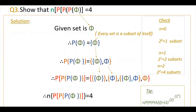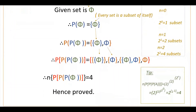Show that n(P(P(P(∅)))) = 4. There are three power sets here. The given set is the empty set. P(∅) = {∅}. Then P(P(∅)) = {∅, {∅}}, which has two elements. Then P(P(P(∅))) has four elements since 2^2 = 4. You can verify using the tip: there are three P's, so compute 2^(2^(2^0)) = 2^(2^1) = 2^2 = 4. Hence proved.